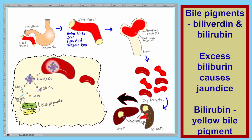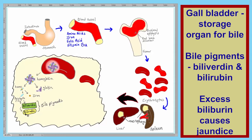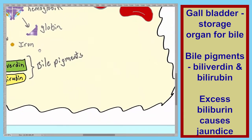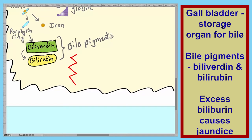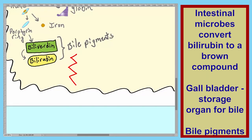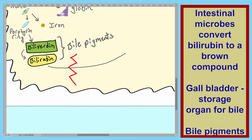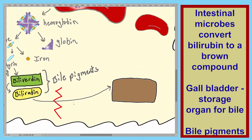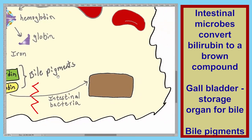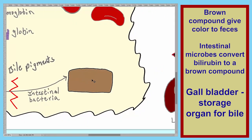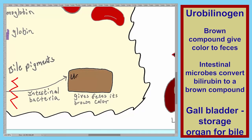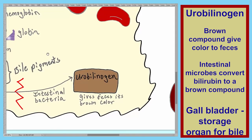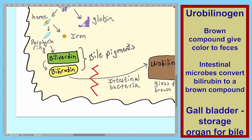The next few steps do not occur in the macrophage. The bilirubin moves into circulation, goes into the blood plasma, and then moves to the liver and then to the gallbladder. The bilirubin is eventually moved to the small intestines, where intestinal microbes convert the bilirubin to a brown-colored compound. This brown compound imparts the brown color to feces. This compound is known as urobilinogen. And bilirubin is responsible for jaundice.